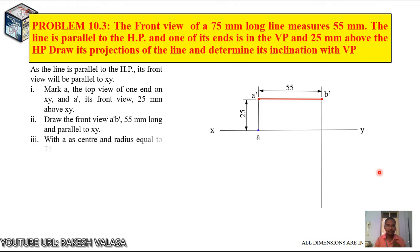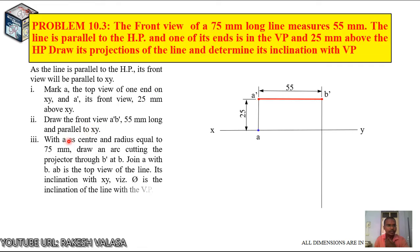The next point is, we have given the true length, that is 75mm. With A as center and radius equal to true length, that is 75mm, draw an arc cutting the projector through B' at point B. Take your engineering compass with 75mm length, A as center. Draw an arc on B' vertical projector. Where the arc cuts on B' vertical projector is B. Now join A and B. That is the top view.